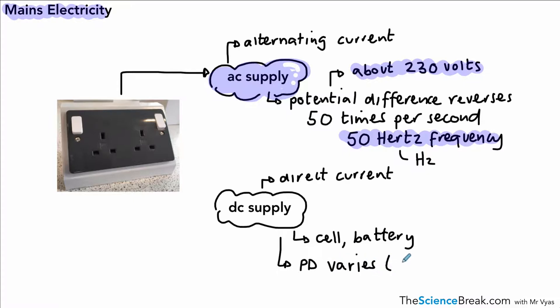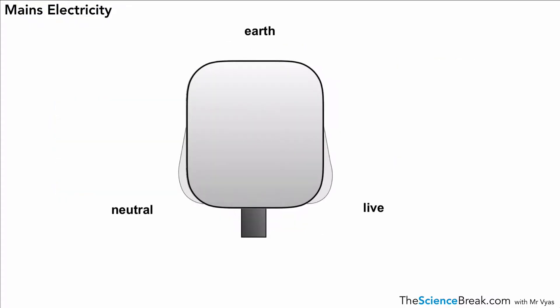The potential difference will vary in our DC supply. So it depends on the cell you're using or the battery you're using. So that could vary 3 volts, 10 volts, 0.5 volts. These are just examples. These are not standard voltages. They're just examples to show that your potential difference can vary in your DC supply. That's not taken from the mains. So that's a few key points about mains electricity.